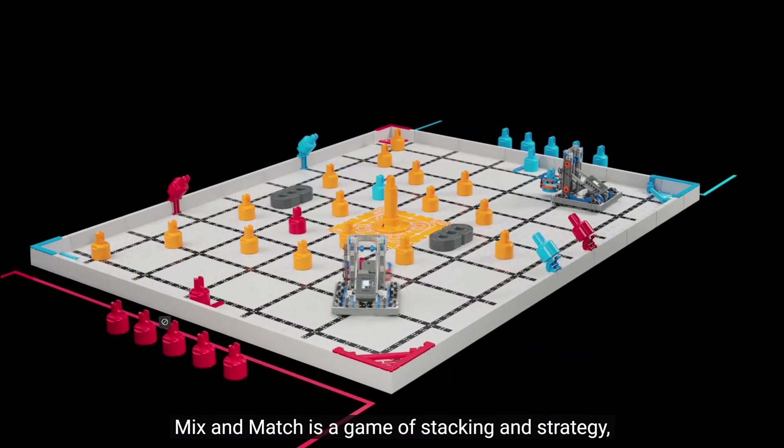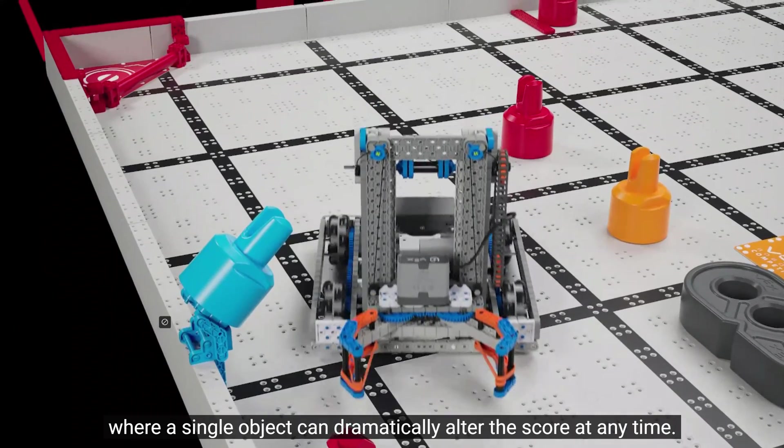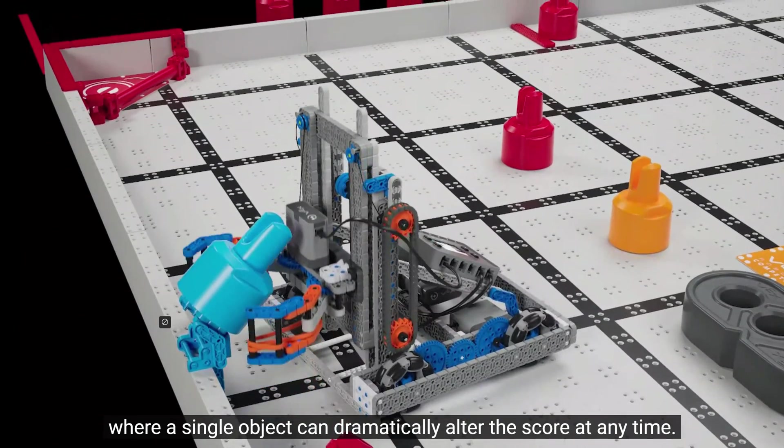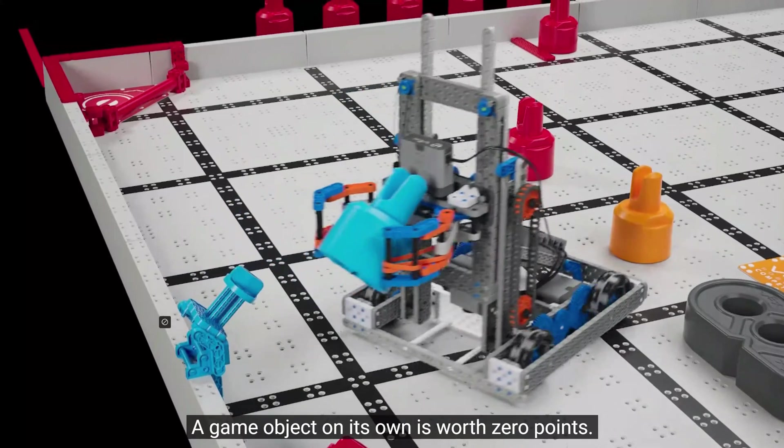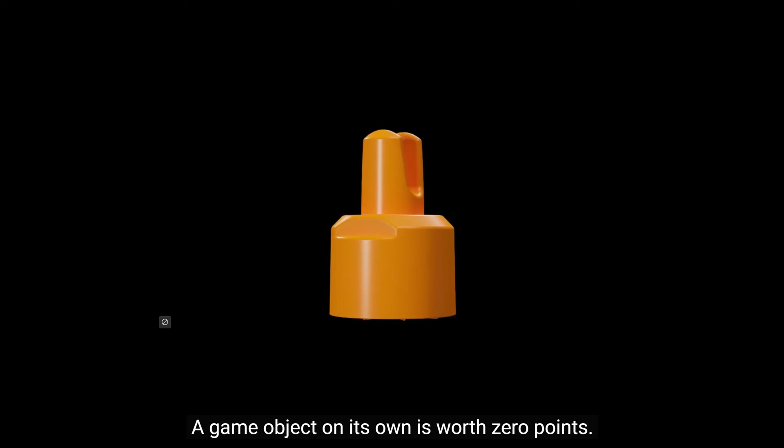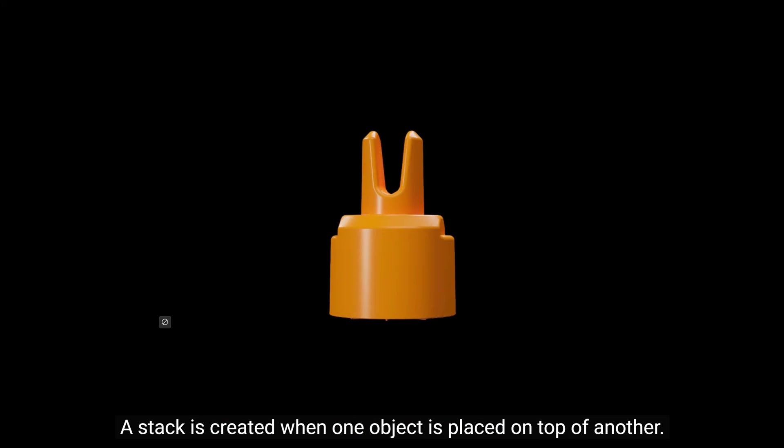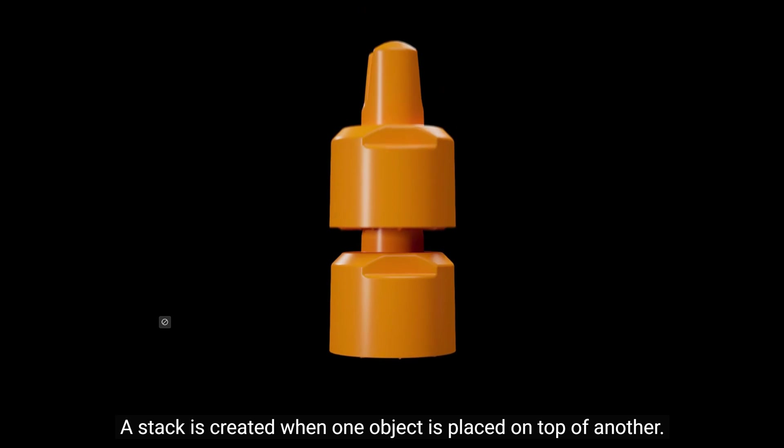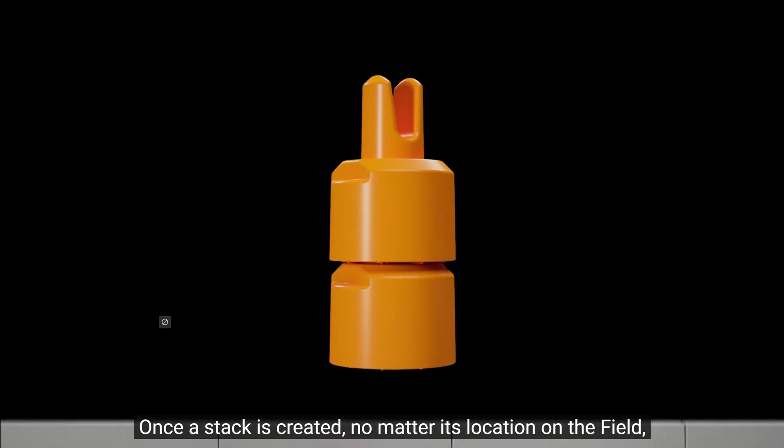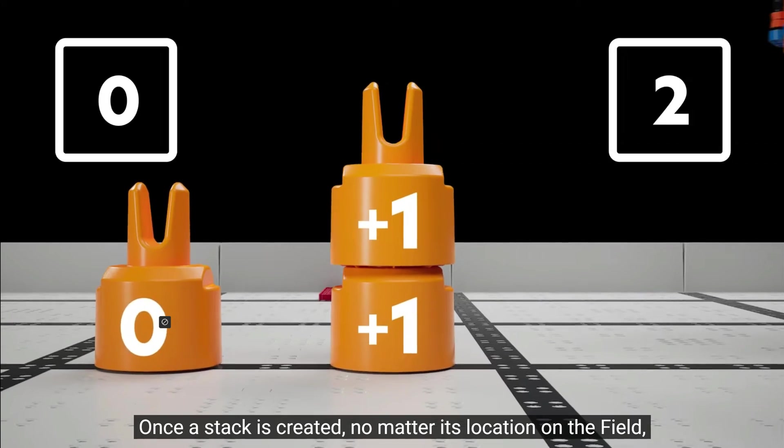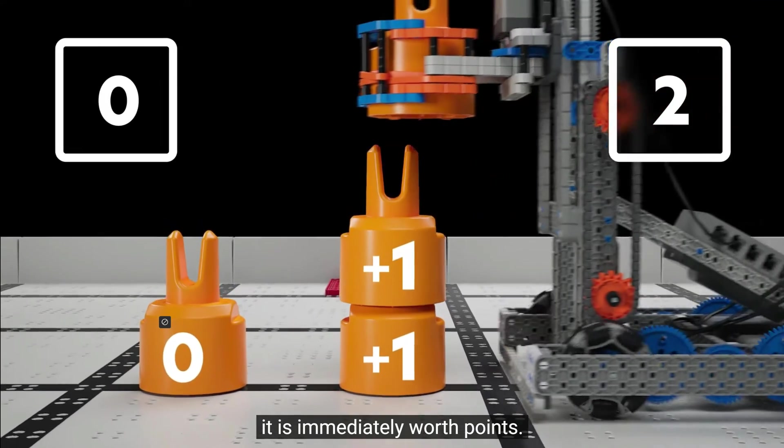Mix & Match is a game of stacking and strategy where a single object can dramatically alter the score at any time. A game object on its own is worth zero points. A stack is created when one object is placed on top of another. Once a stack is created, no matter its location on the field, it is immediately worth points.